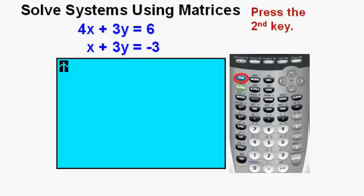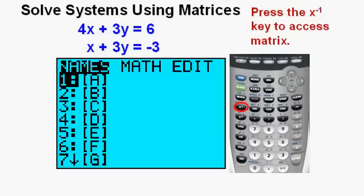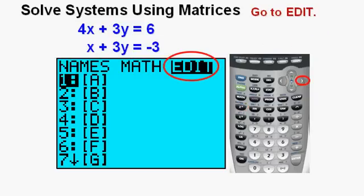But instead of writing out the matrices by hand, we can enter the equations in this form directly into a matrix in the calculator. We need to get to the matrix menu by pressing 2nd, then press the x to the negative 1 power key on the left that has the matrix above it. This is the matrix menu. Arrow twice to the right to access the edit submenu. Press enter.